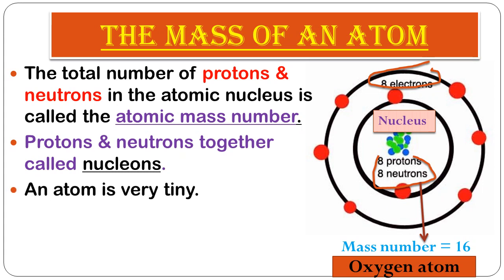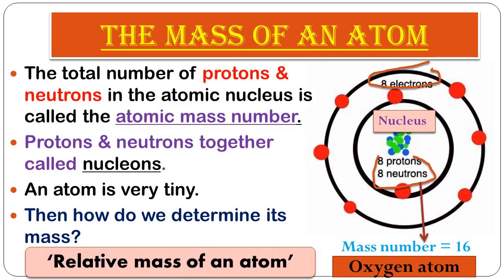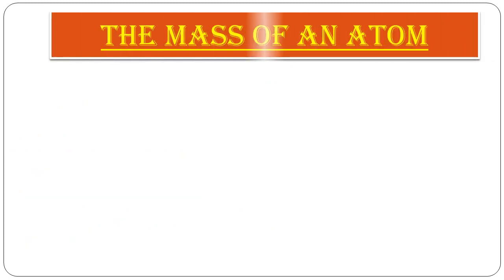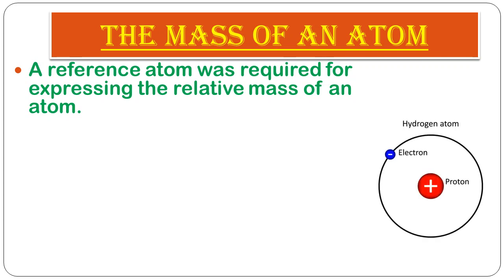Since an atom is extremely tiny, how do we determine its mass? It was not possible for 19th-century scientists to measure atomic mass accurately. Therefore, the concept of relative atomic mass was introduced. To determine relative mass, a reference atom was required. Initially, the hydrogen atom — being the lightest, with only one electron — was considered the reference atom.